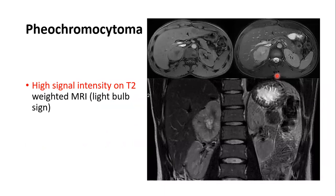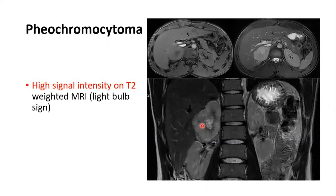The most important MRI feature of pheochromocytoma is the 'light bulb sign' on T2-weighted imaging — very high signal intensity. This high T2 signal is characteristic and helps distinguish pheochromocytoma from other adrenal lesions.